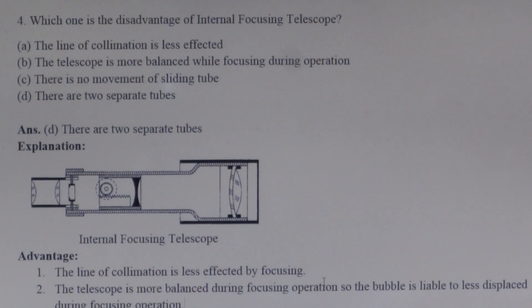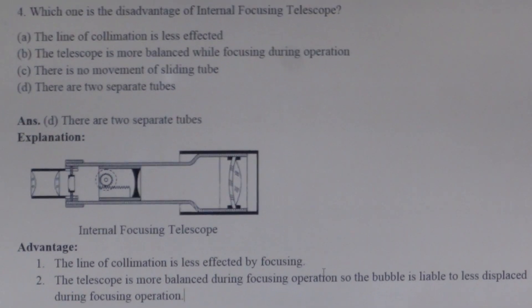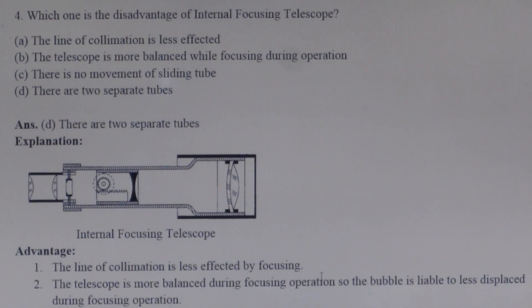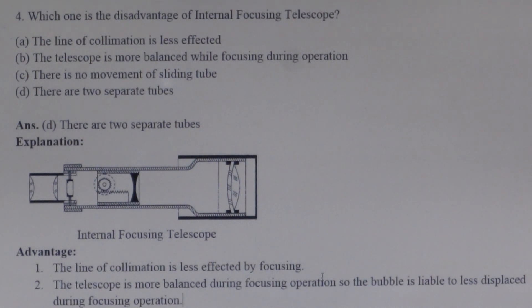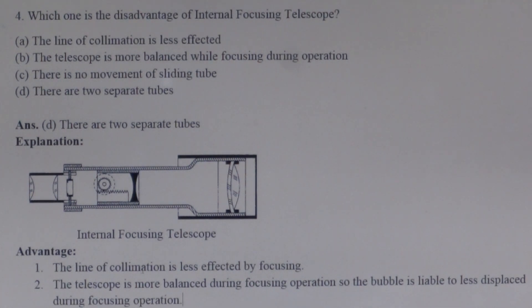Next question: Which of the following is a disadvantage of an internal focusing telescope? There are two types of telescopes used in survey work. The internal focusing telescope is most commonly used because it has several advantages: the line of collimation is less affected by focusing, the telescope is more balanced during focusing, the bubble is liable to less displacement, and there is no movement in the sliding tube.